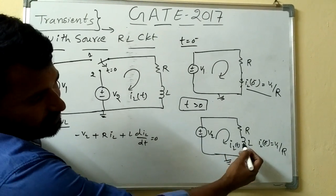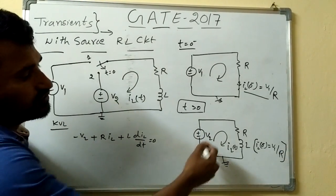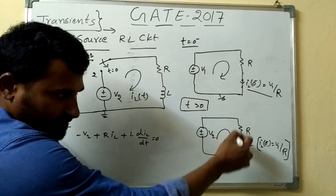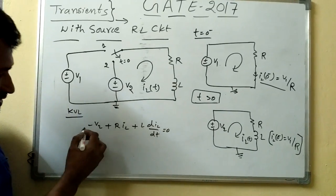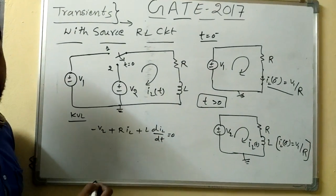Now, how to see, this inductor is already having some initial current that is v1 by r. Now, how to solve this type of problem? Again, apply KVL, so minus v2 plus rL into iL plus l into diL by dt equal to 0.